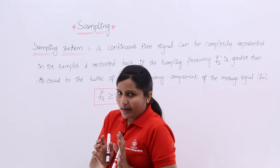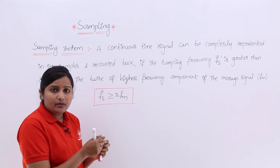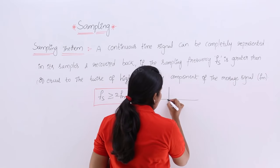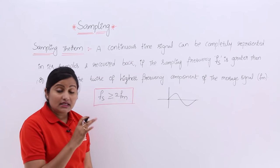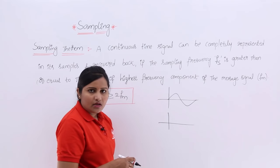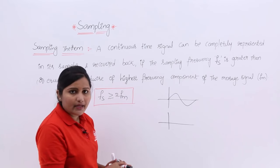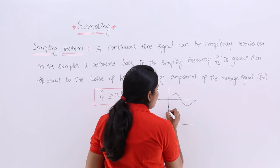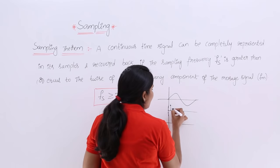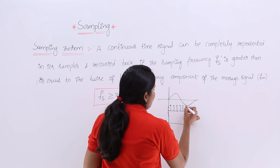Let me discuss how to keep this statement in mind. For example, if you have any continuous time signal — I am considering a sine signal — this signal can be completely represented into its samples by multiplying a pulse train. We can completely convert this signal into its samples by multiplying a pulse train with frequency fs.